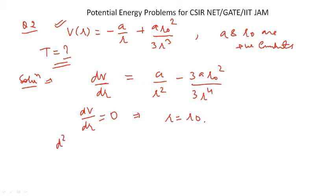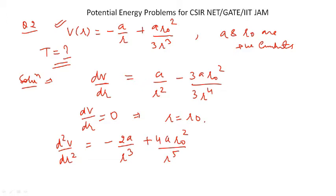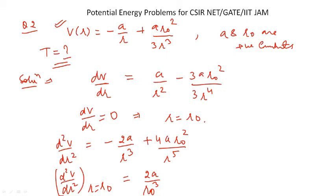Now we find d²V/dr². At r = r₀ it comes out to be 2a/r₀³. Since a is a positive constant and r₀ is also positive, this is positive. That means d²V/dr² is positive at r = r₀, confirming it is a stable equilibrium point.